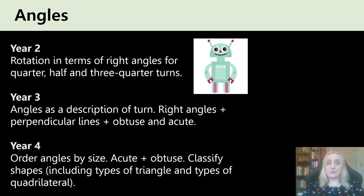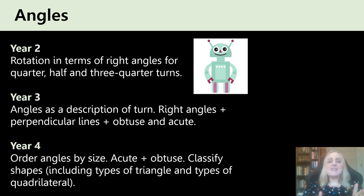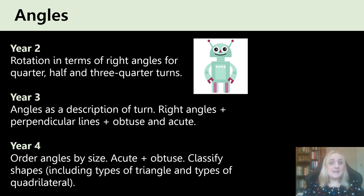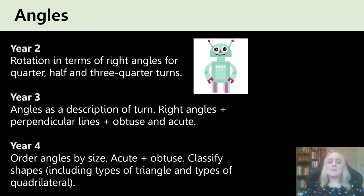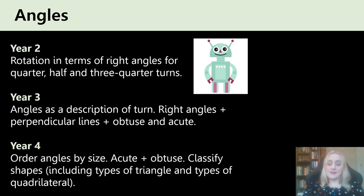Let's start with angles. Angles is a topic that children learn from a really young age — they actually start the concept of an angle all the way down in Year 2. There they're really learning about the idea of turning. That concept develops throughout Year 3 and 4, where they understand the idea of a right angle being a quarter turn and are introduced to bigger than a right angle or less than a right angle — acute and obtuse. By Year 4 they're ordering angles by size and looking at different types of triangle and quadrilateral.